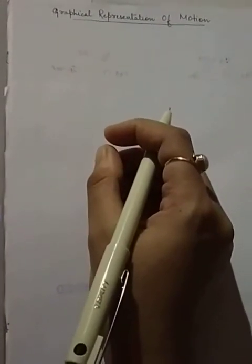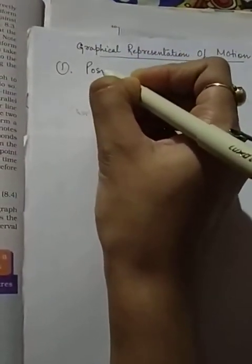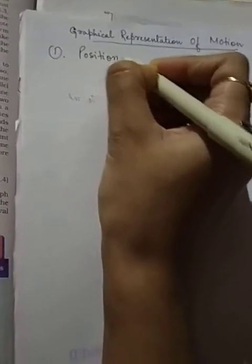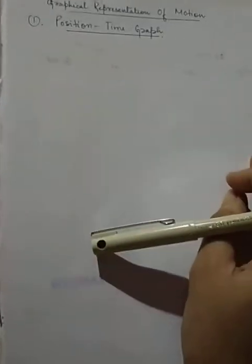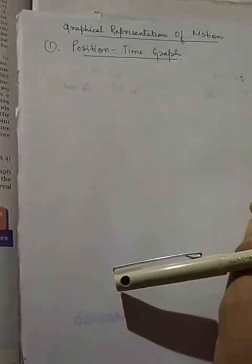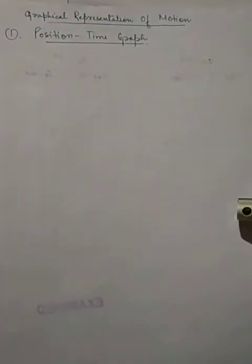So, I will show you three graph types. Actually, I will show you two graph types. First, you have a position-time graph. What is the graph for uniform motion and non-uniform motion?